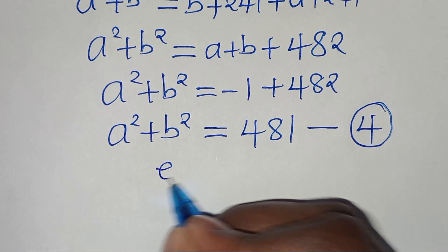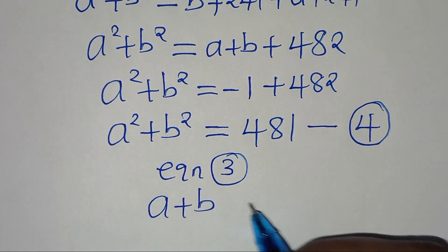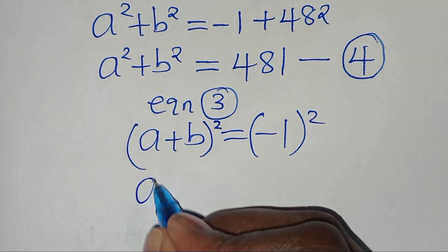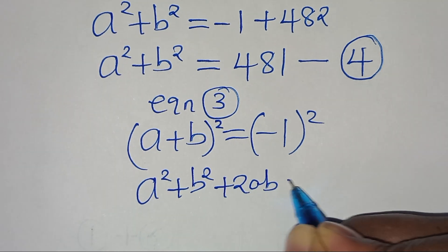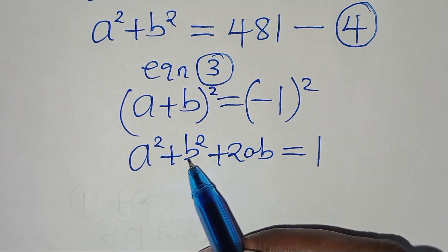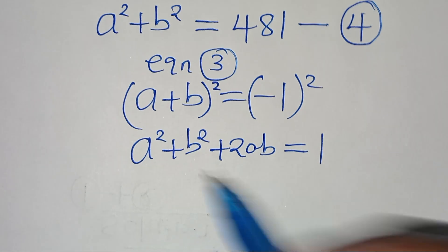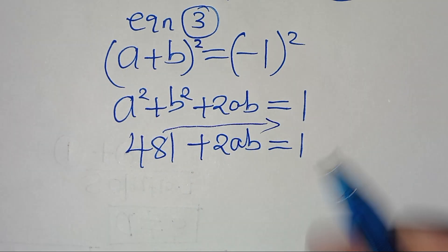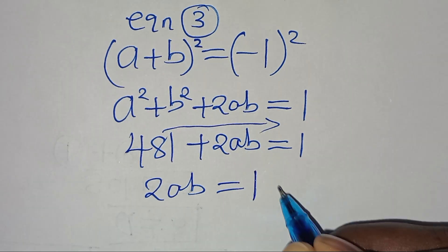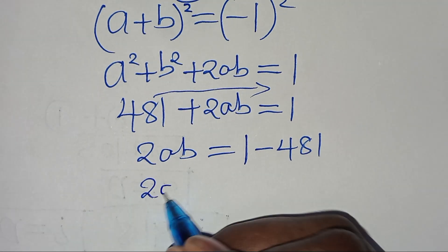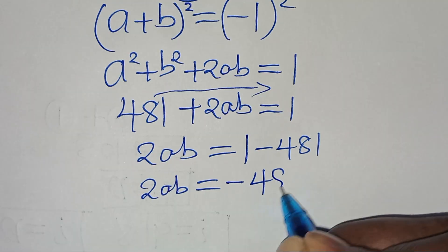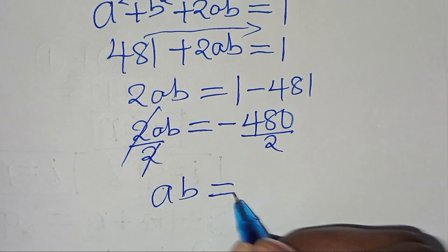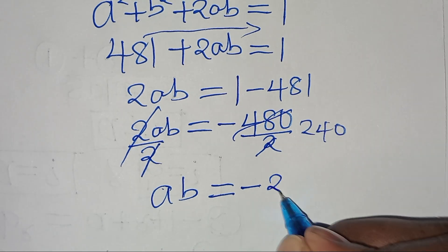From equation 3, a + b = -1. Squaring both sides gives a squared + 2ab + b squared = 1. Substituting equation 4, where a squared + b squared = 481, we get 481 + 2ab = 1, so 2ab = 1 - 481 = -480. Dividing both sides by 2, we find ab = -240.